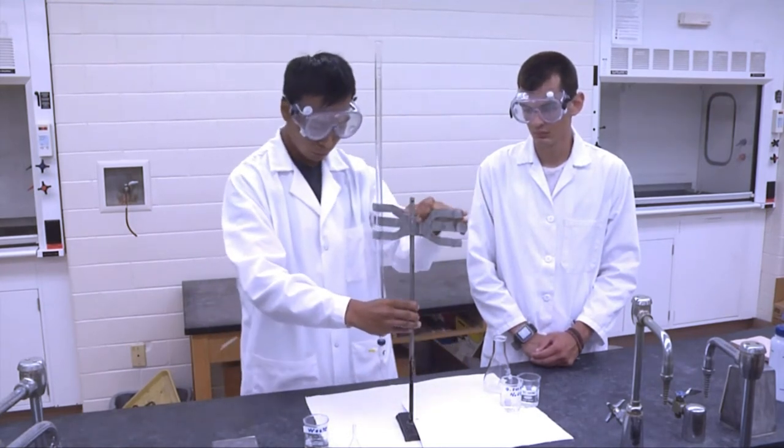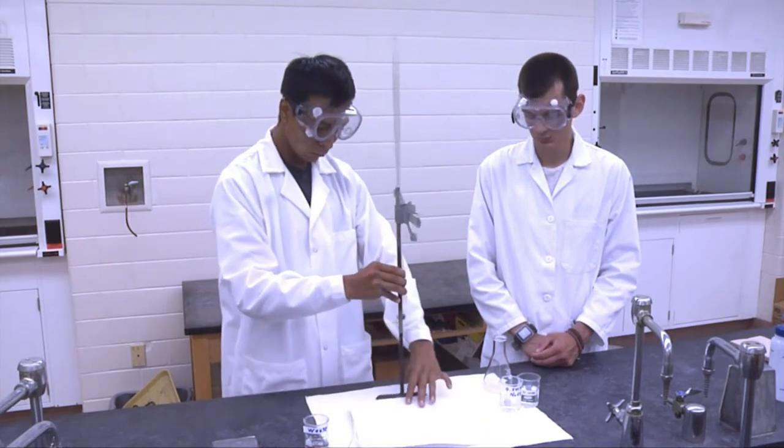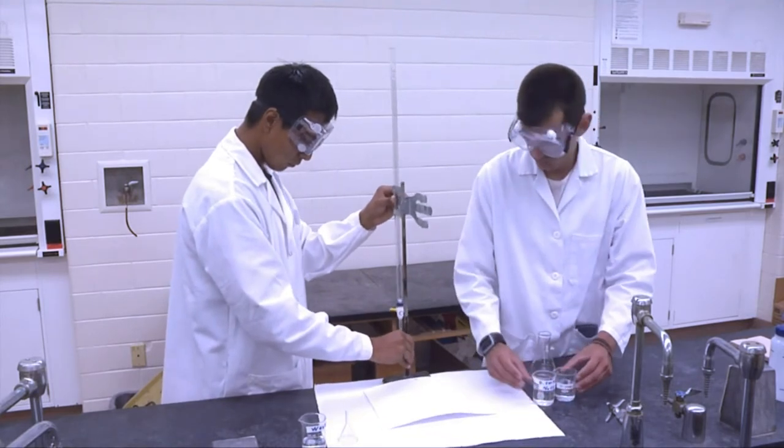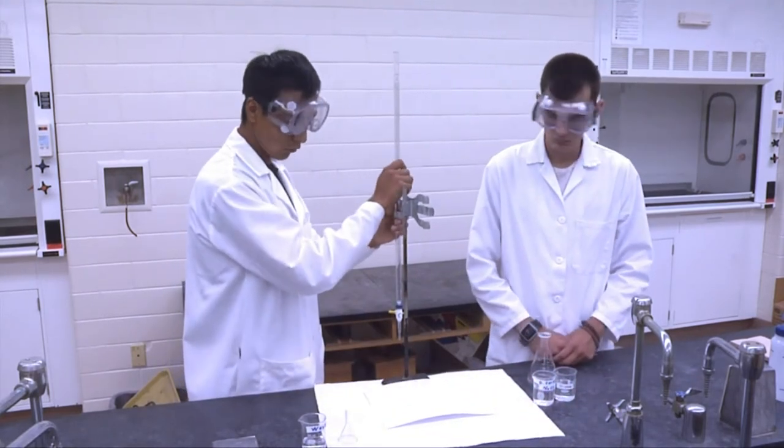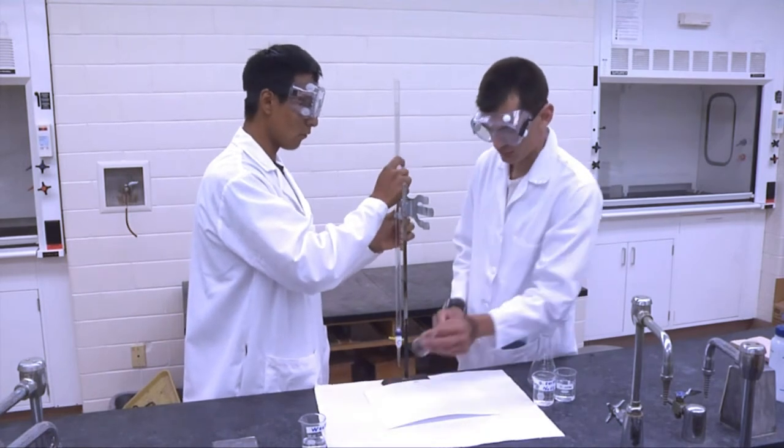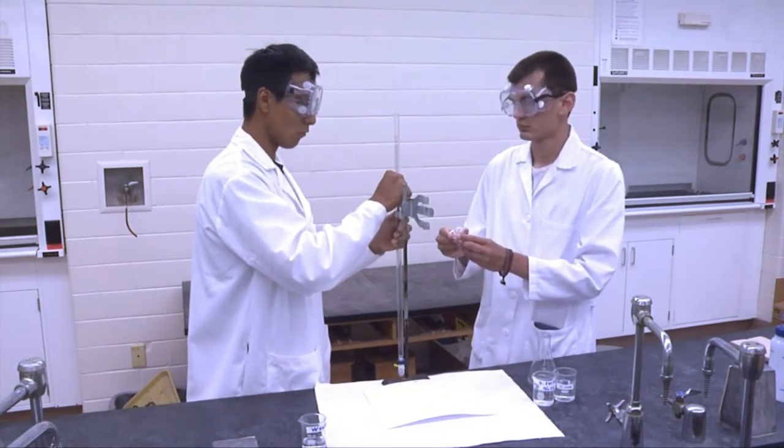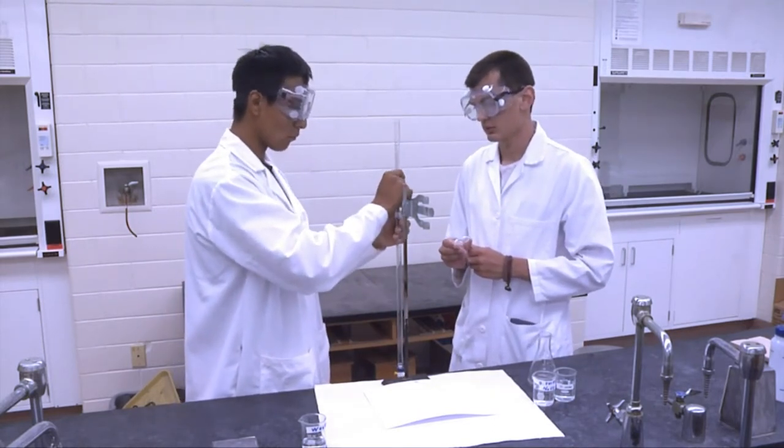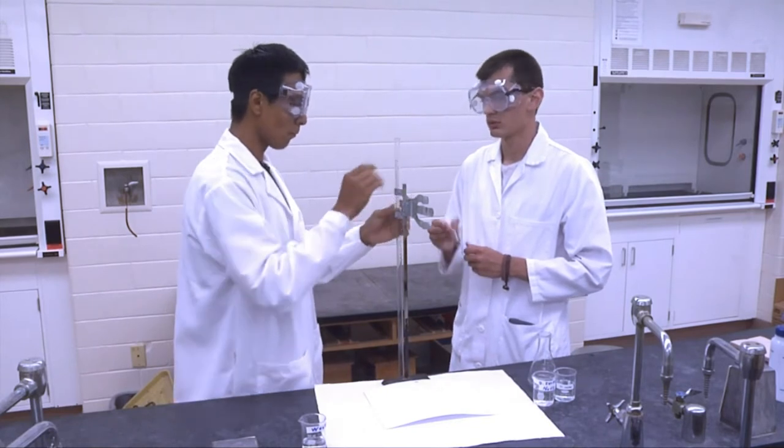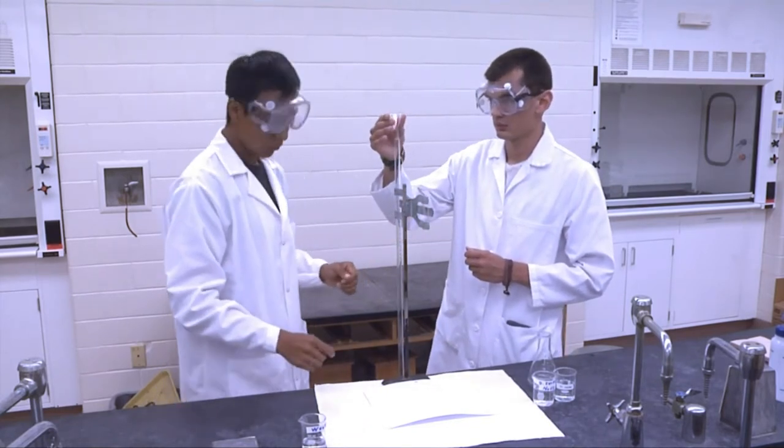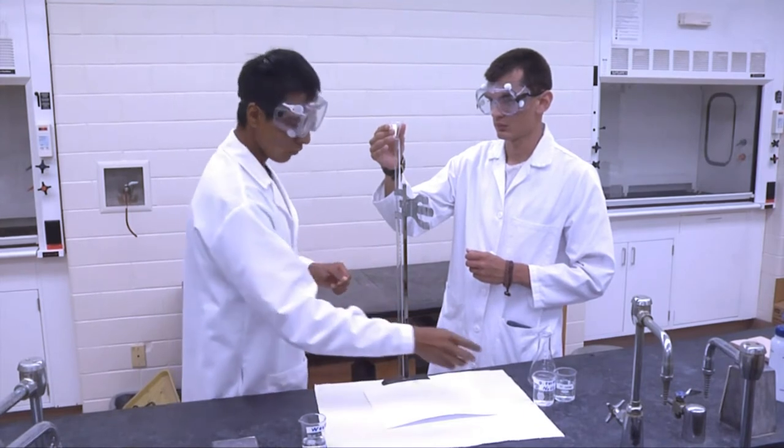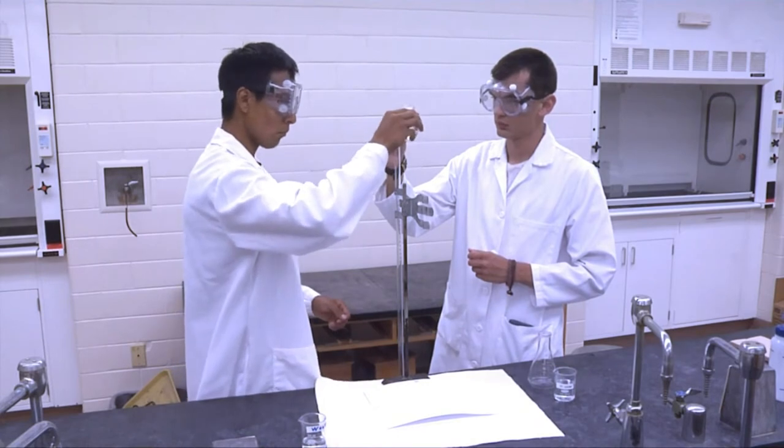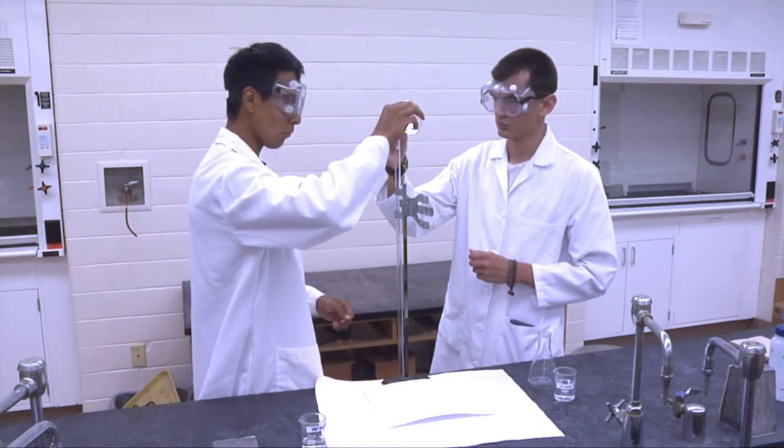With the burette properly rinsed, it can be filled. To prevent spills and splashes, make sure the stopcock is closed, a funnel is used, and the burette is adjusted to an appropriate height. Take special care not to overfill the burette, and remove the funnel when done.